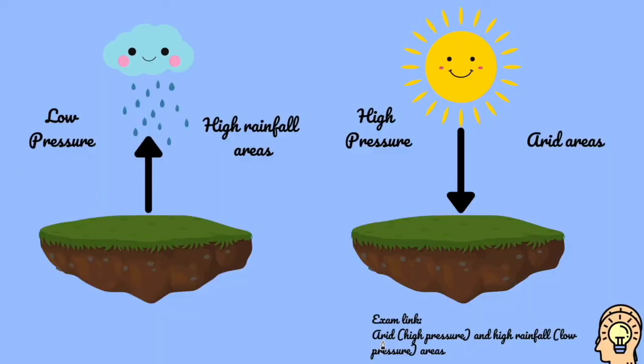So for our exam link here, you need to know about arid areas which are high pressure areas, and high rainfall areas which are low pressure. Low pressure is where your air is rising which leads to high rainfall, and high pressure areas are your sinking air which lead to arid areas across the world. In this clip we're going to focus on each of these different types of pressure and the types of weather and climate that occur as a result.